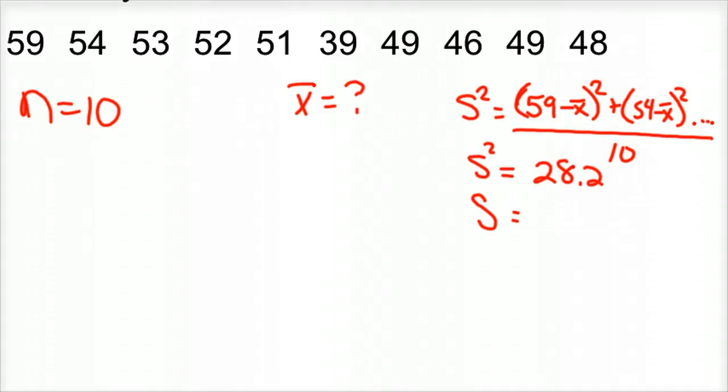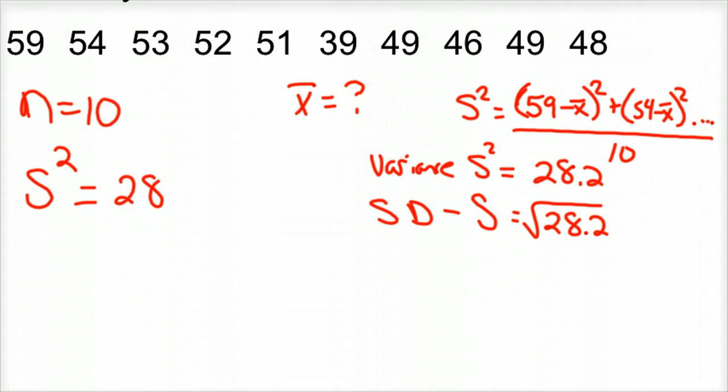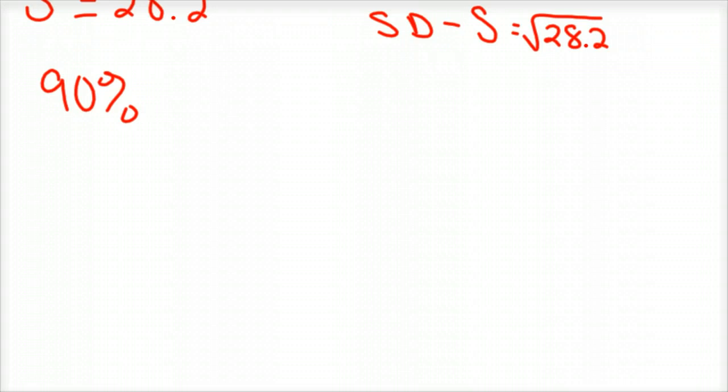And so once you do all that, you get a variance. And again, this is variance for your sample. And this is your standard deviation for your sample. And you see, you could take the square root of that and get the standard deviation. We don't really need it for this, so I'm just going to put square root of 28.2. And so with just these two pieces of information and the fact that we want a 90% confidence interval of the variance and the standard deviation.